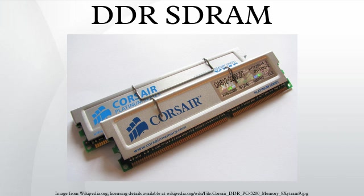DDR-SDRAM modules for desktop computers, commonly called DIMMs, have 184 pins, and can be differentiated from SDRAM DIMMs by the number of notches.